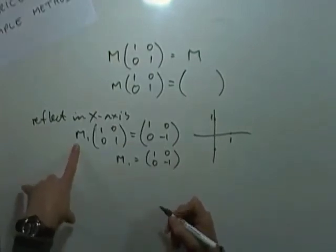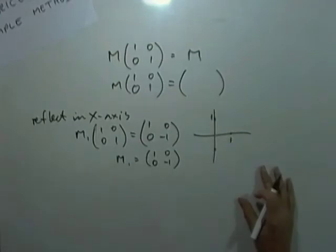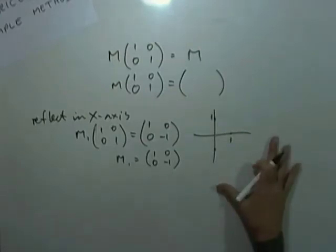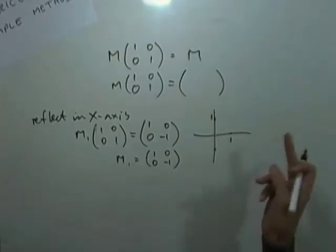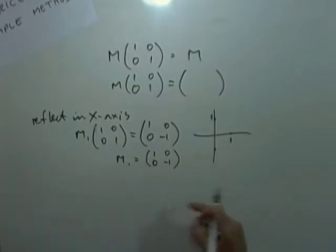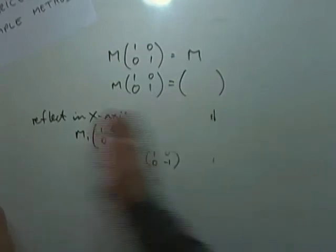Now there are lots of these little two by two matrices associated with various transformations and you don't need to try and learn them because you'll only get confused with the various ones and where the negatives go. It takes seconds to figure them out. Try a different one.